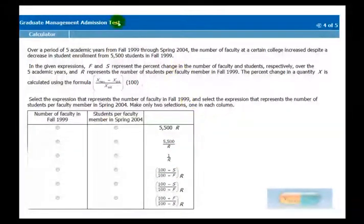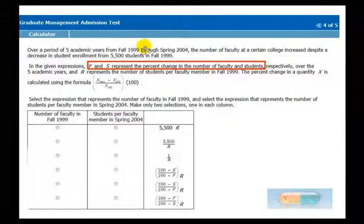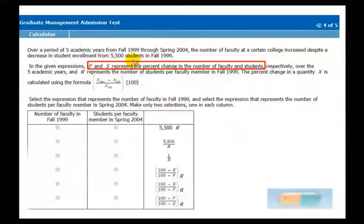Okay, let's do a recap. So basically, you read this question, you notice there's two dates, 1999 and 04, and you're given information about how it changed, F and S. That represents the change between these two years. You're also given initial information about the number of students in 99.